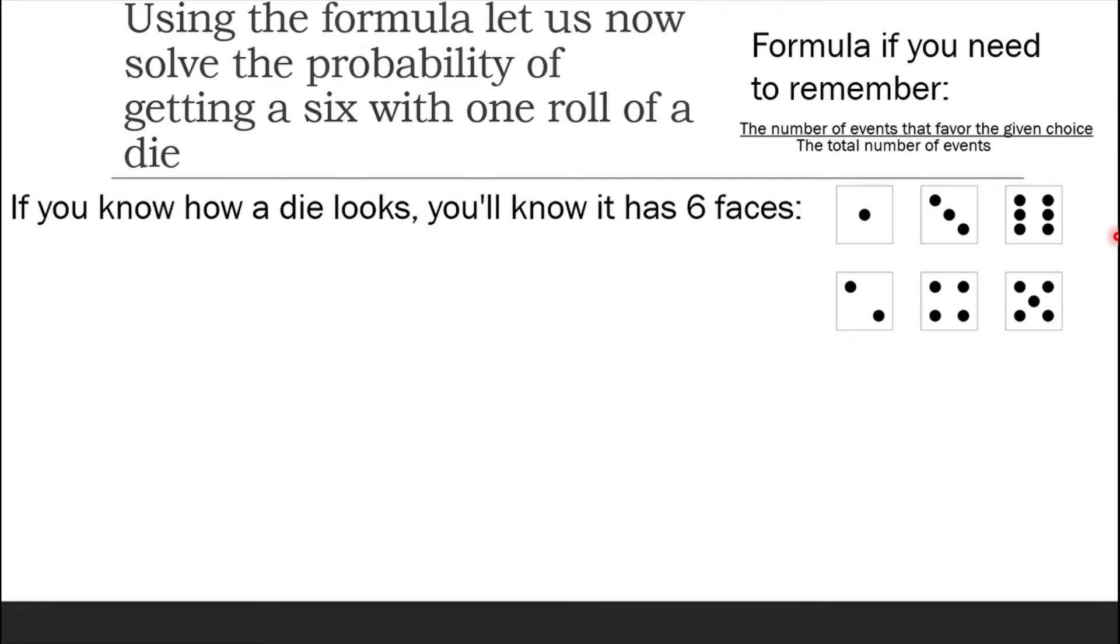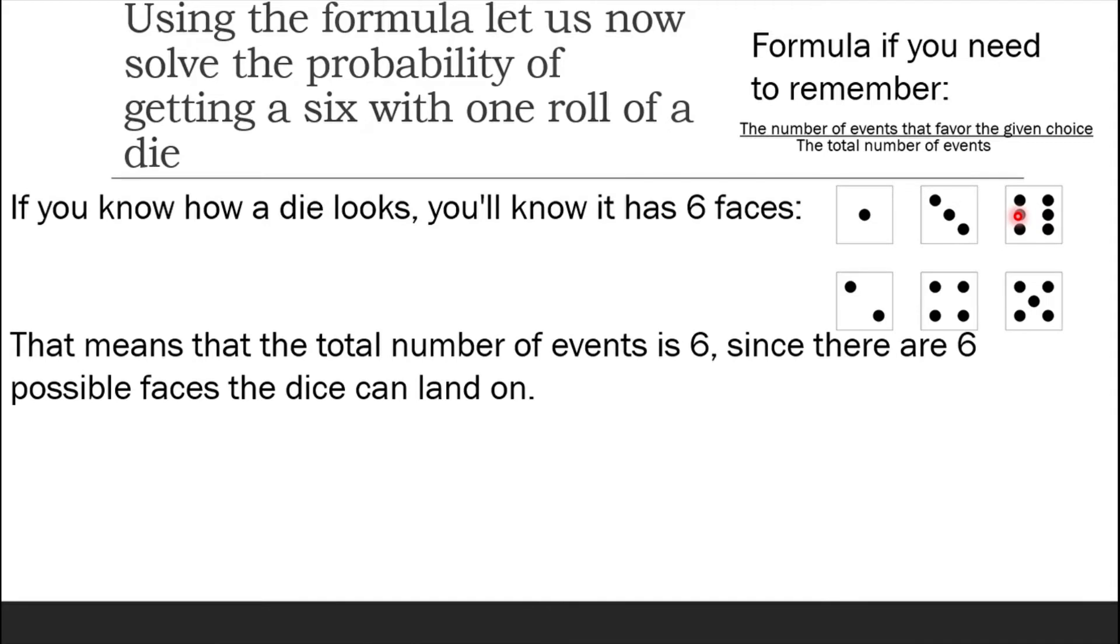Back to the probability of getting a 6 with one roll of a die. If you know how a die looks, you'll know it has 6 faces: 1, 2, 3, 4, 5, and 6. That means the total number of events is 6, since there are 6 possible faces that the dice can land on.